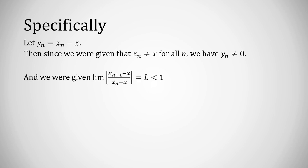Also, we were given that the absolute value xn plus 1 minus x over xn minus x has limit L, which is less than 1. In other words, the limit of the absolute value yn plus 1 over yn exists and is less than 1. So based on the ratio test for sequences, we can exactly conclude that since this limit exists and is less than 1, the sequence yn converges to 0.